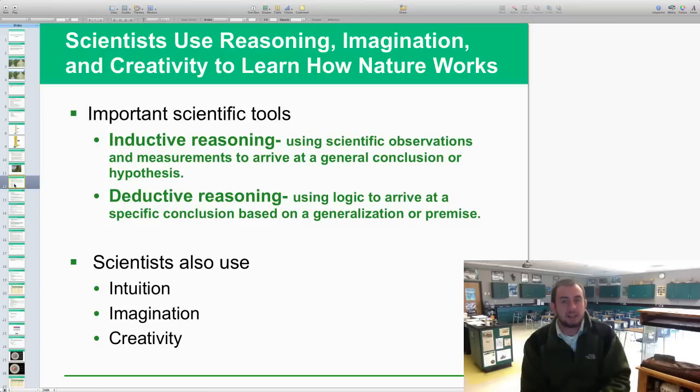Scientists use reasoning, imagination, and creativity to learn how nature works. There's two main important scientific tools we use, and most of them are just with our minds. One of them is inductive reasoning, which is where you use scientific observations and measurements to arrive at a general conclusion or hypothesis, using scientific observations, measurements, thinking, scientific method, those kind of things. The second one is deductive reasoning, which is using logic to arrive at a specific conclusion based on generalizations or premises or observations. That's kind of like the basic knowledge, your intuition. Inductive reasoning is more the scientific observation, measurement, data collection, things like that.